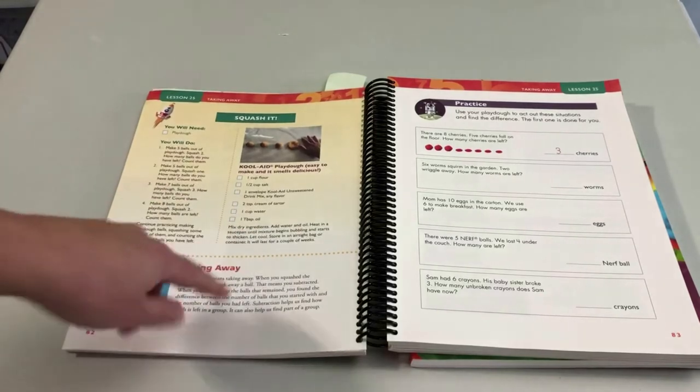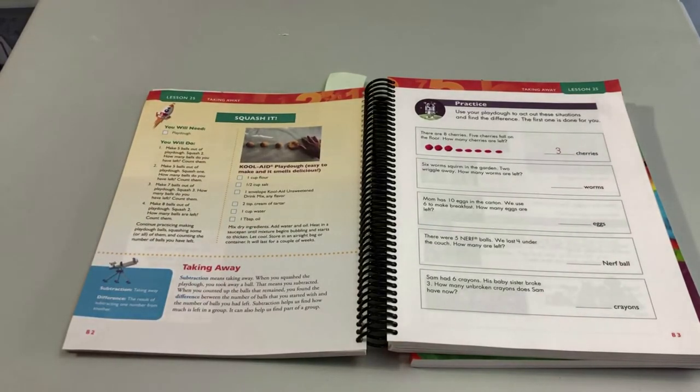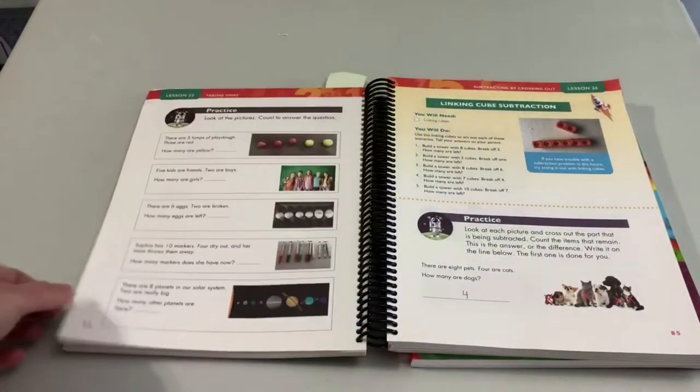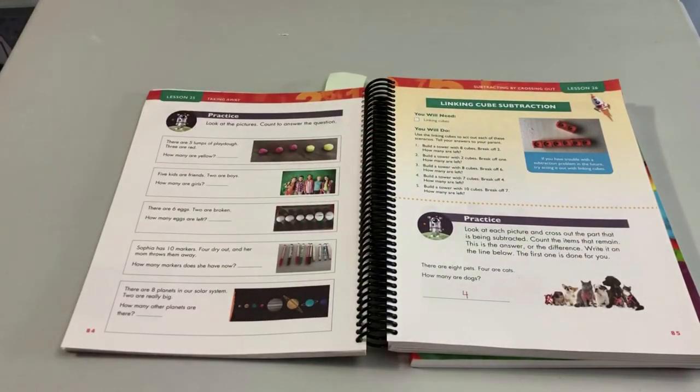It's a super concrete way of acting out subtraction, and we're really involving their senses—they can touch it, feel it. If you follow the recipe for Kool-Aid Play-Doh, they can smell it. They're getting introduced to this mathematical idea in a really tangible way. There are other activities too where I keep it concrete, like building towers and breaking off parts, reinforcing that concrete idea.